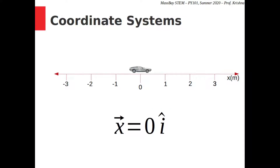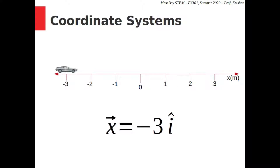Let's explore position in a more tangible sense. If I place this car at the origin, its location is 0 î meters. If the car were placed here, its position is 2 î meters — 2 meters from the origin, along the x-axis, in the positive direction (that is, right). And over here, the car's position is negative 3 î meters — 3 meters left of the origin along the x-axis. This coordinate system gives us an unambiguous way of locating the car using vectors.